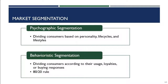We can also segment customers by behavioristic characteristics, or their buying situation segments. This divides customers according to their usage, loyalty, and buying responses. It follows the rule that 80% of your purchases come from 20% of your customers. You treat your best customers differently than your occasional customers, and we'll talk about that more in our customer loyalty chapter.